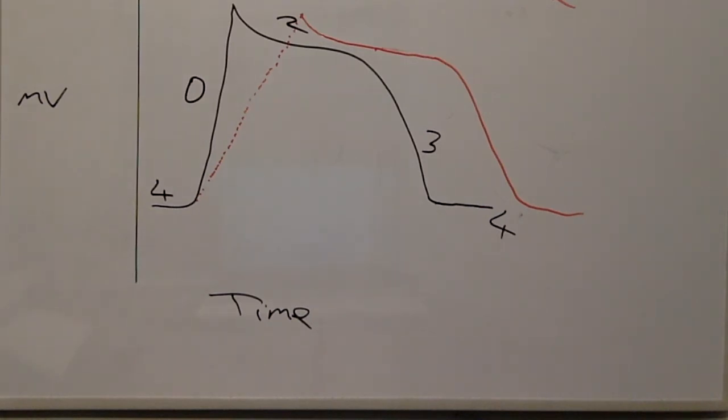Potassium channel blockers are Vaughan-Williams class 3 medications, and these delay phase 3 repolarization. This lengthens the duration of the action potential and the refractory periods.